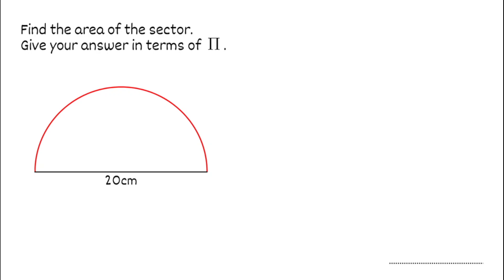So for our first question we've got to find the area of the sector, giving our answer in terms of pi. For this first question we can see we've got a semicircle. All we have to do is find the area of the whole circle and then, because we've got half a circle, halve it. So to find the area of this semicircle we'd use the formula pi r squared, but then we'd divide by 2.